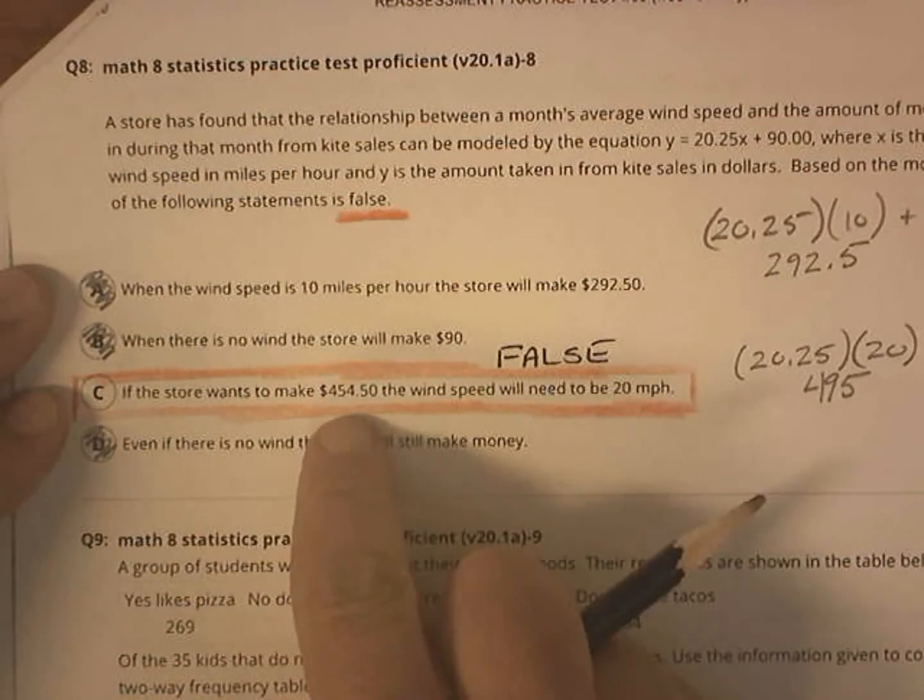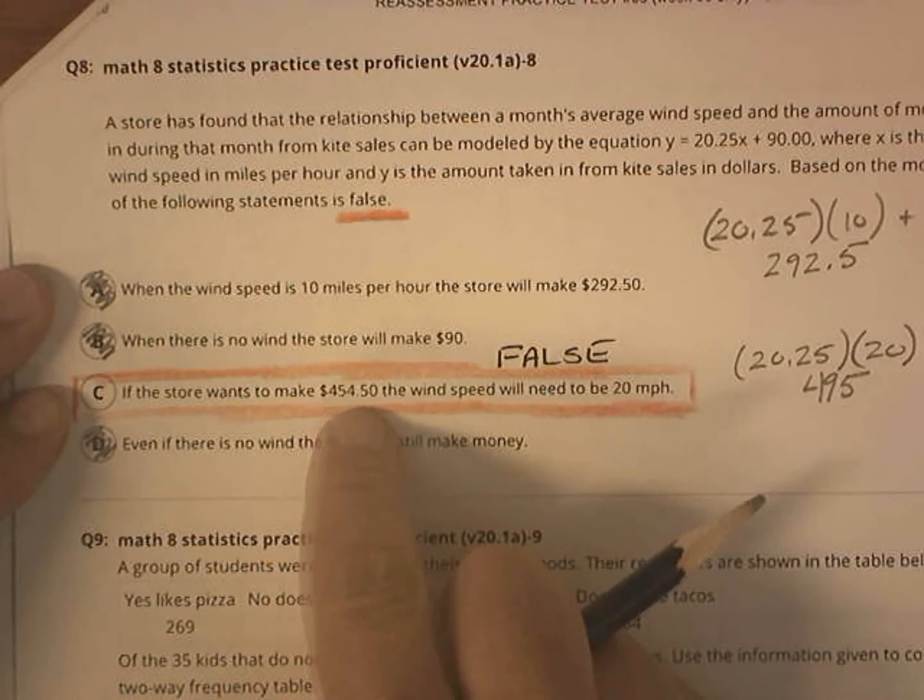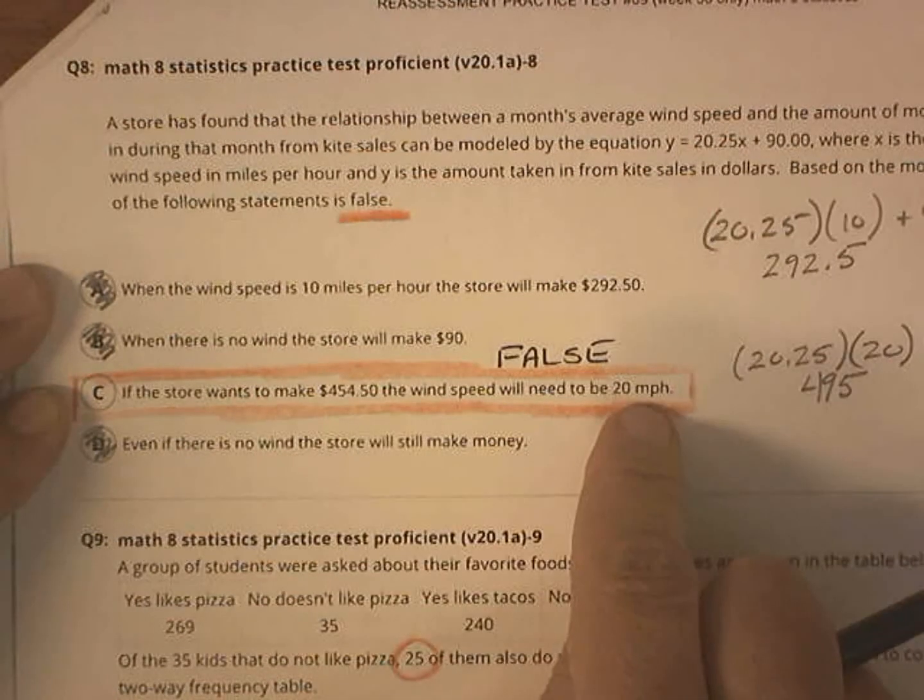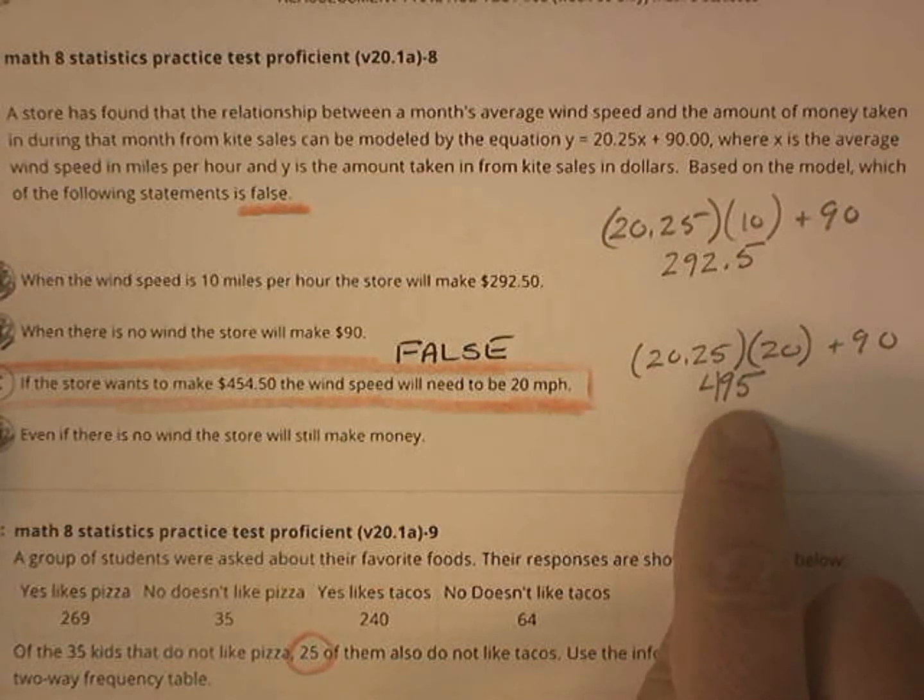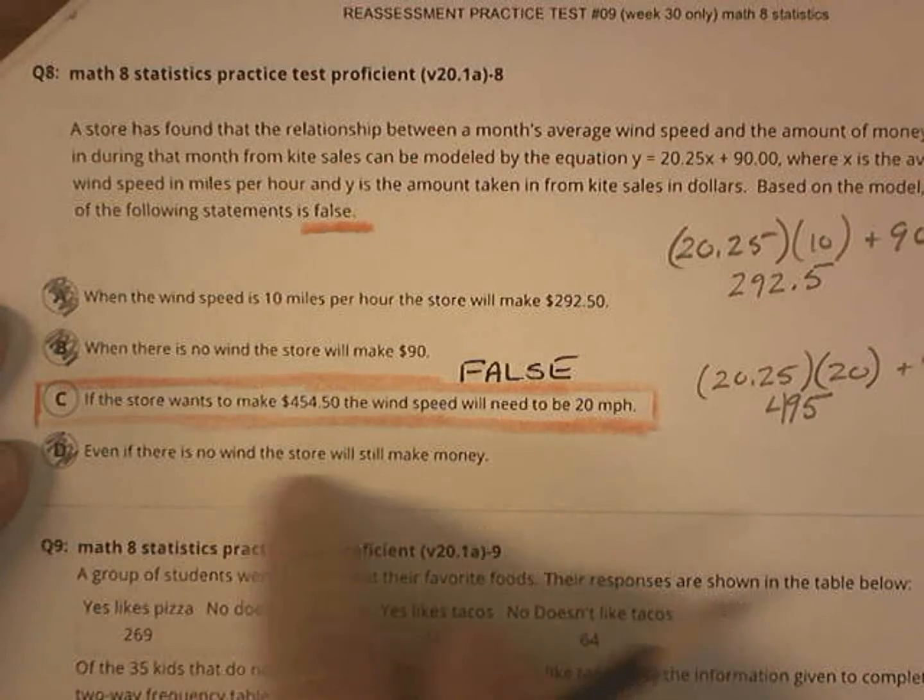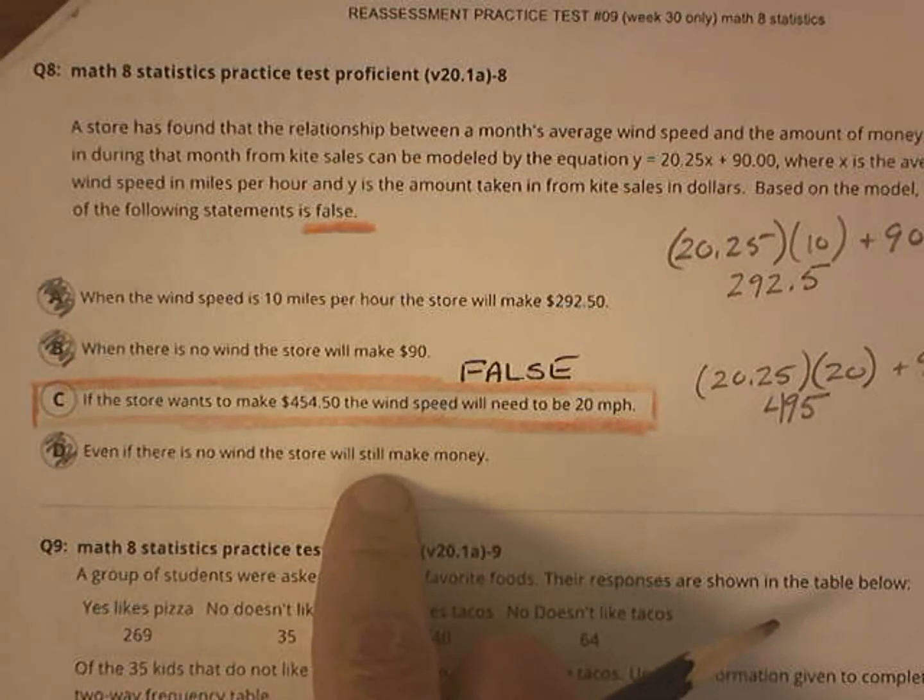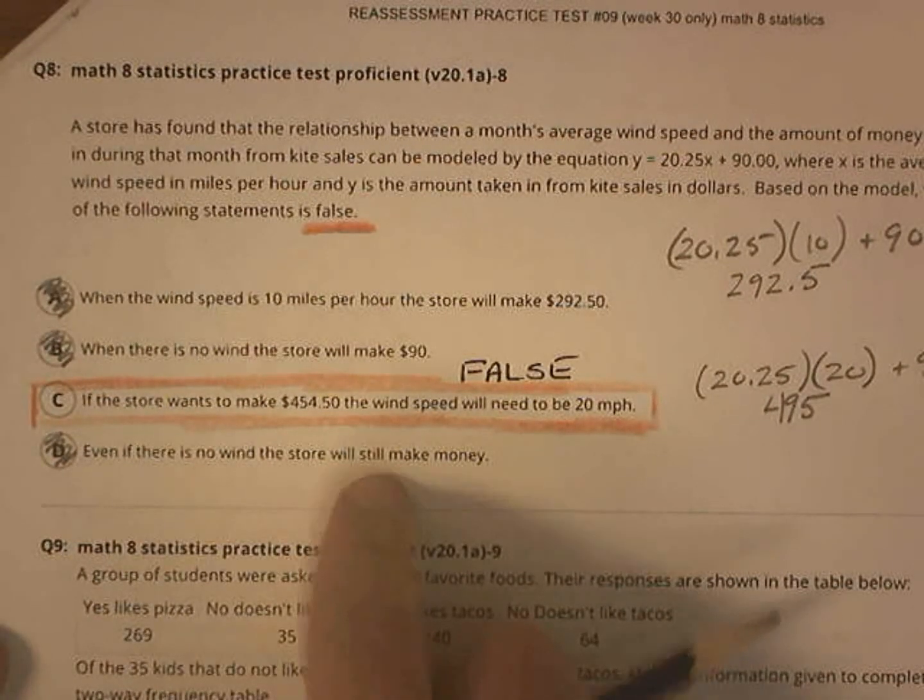If the store wants to make $454.50, the wind speed will have to be 20. That's actually false. If the wind speed is 20, they actually make $495. That's the false one. Even if there is no wind, the store will still make money. Yes, that is true. How much will they make? Well, they'll make $90.